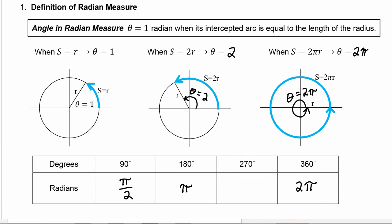And 270, we know, is halfway between 180 and 360. So halfway between π and 2π would be one and a half π, which we would write as 3π/2.